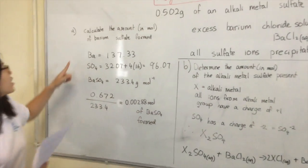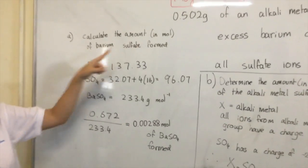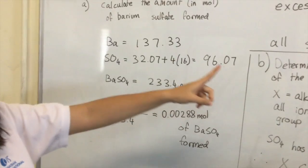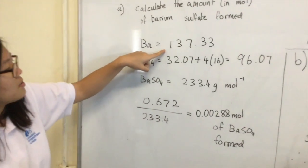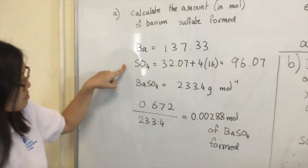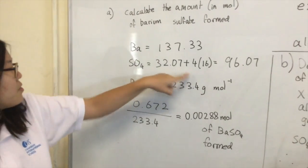The first question is to calculate the amount in mole of barium sulfate formed. Barium sulfate, if you see the periodic table, you can find out the atomic mass of each. This is the ion, so you have to add them all.